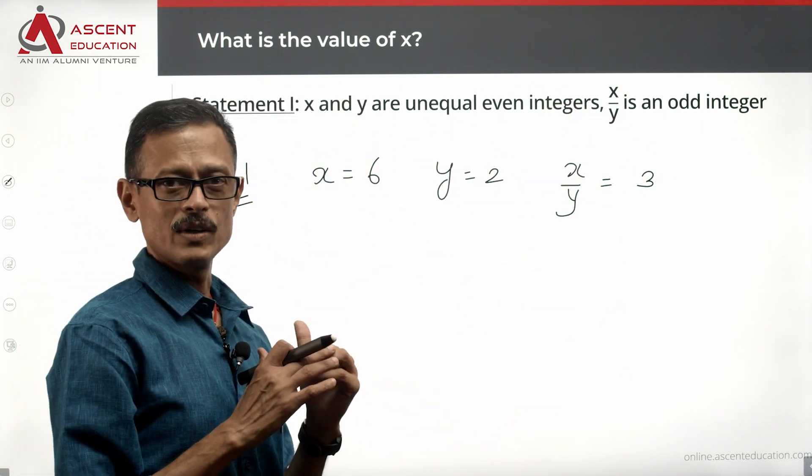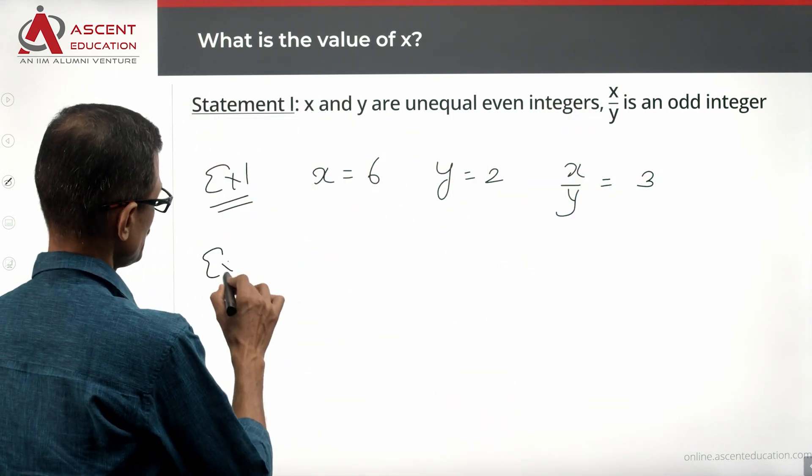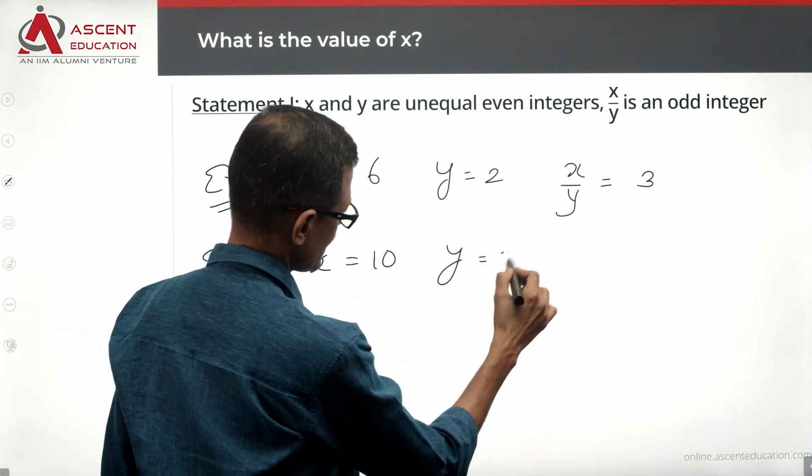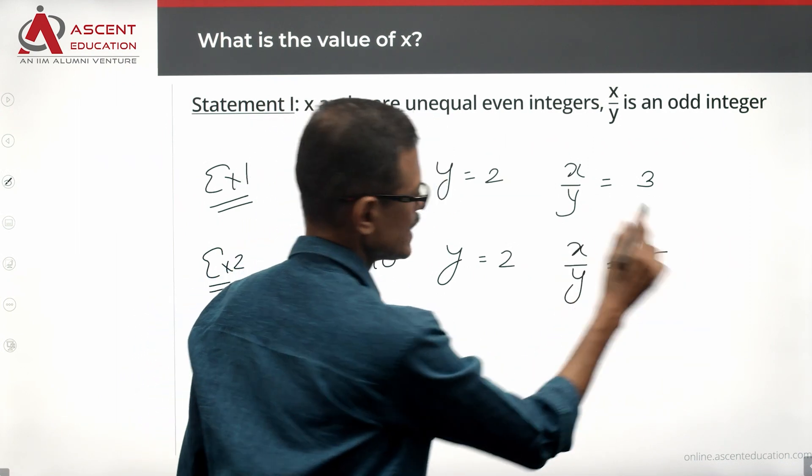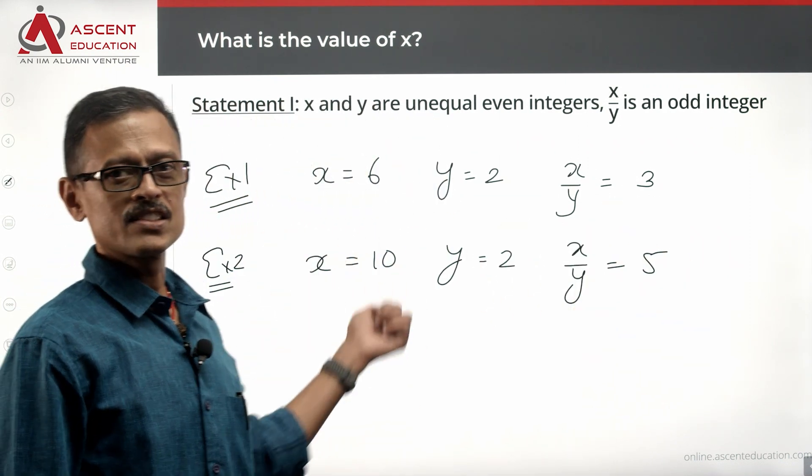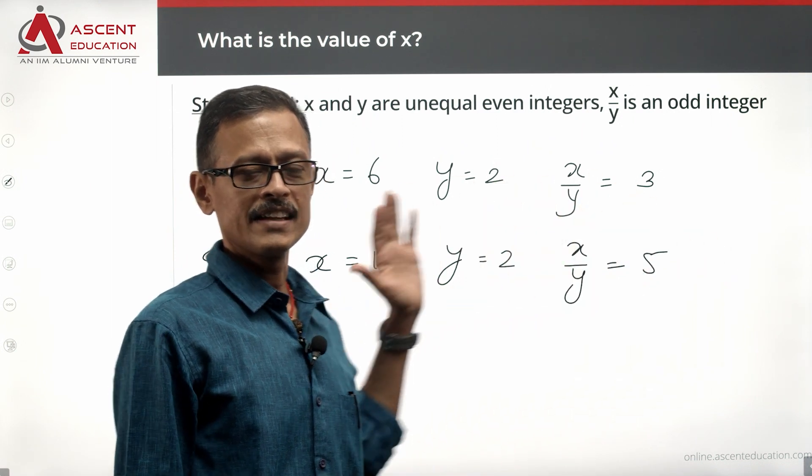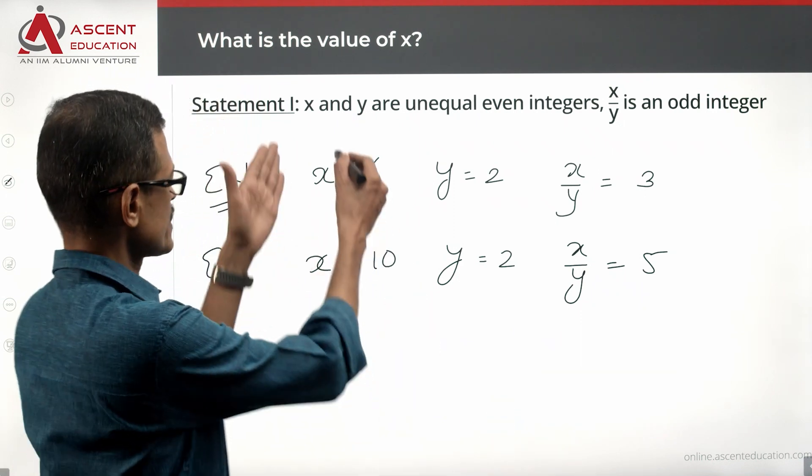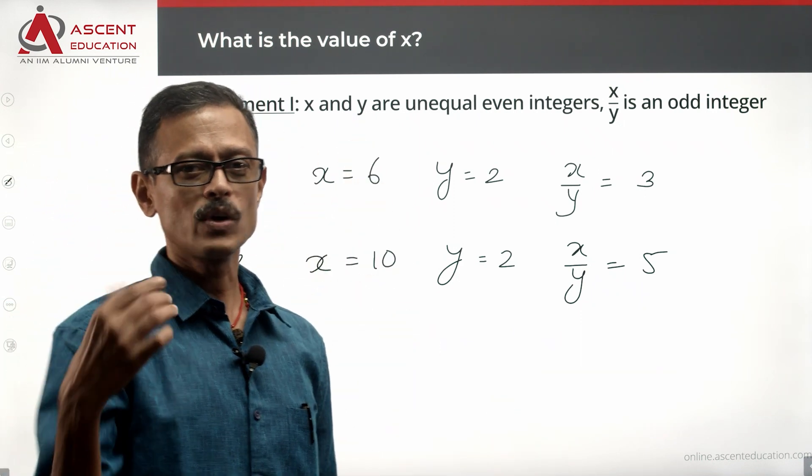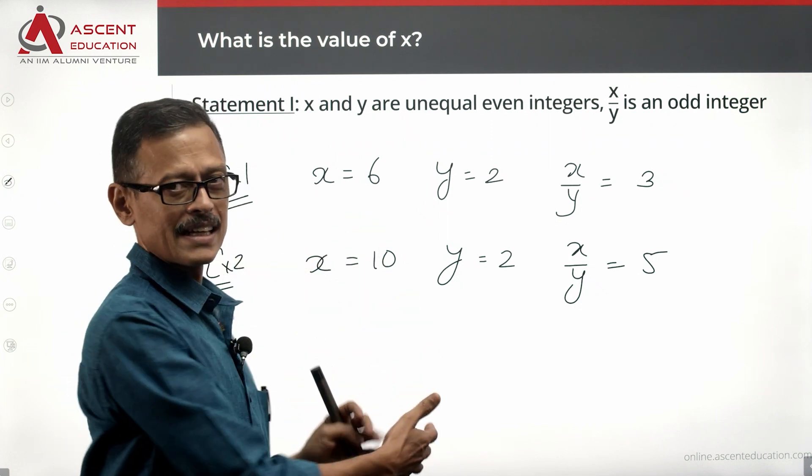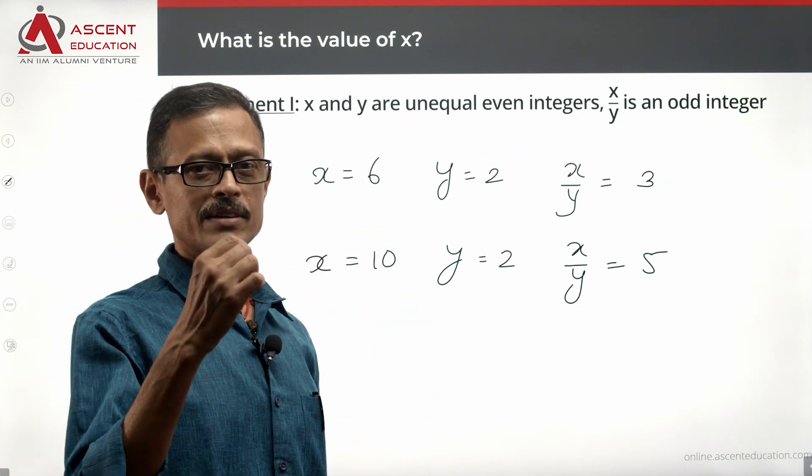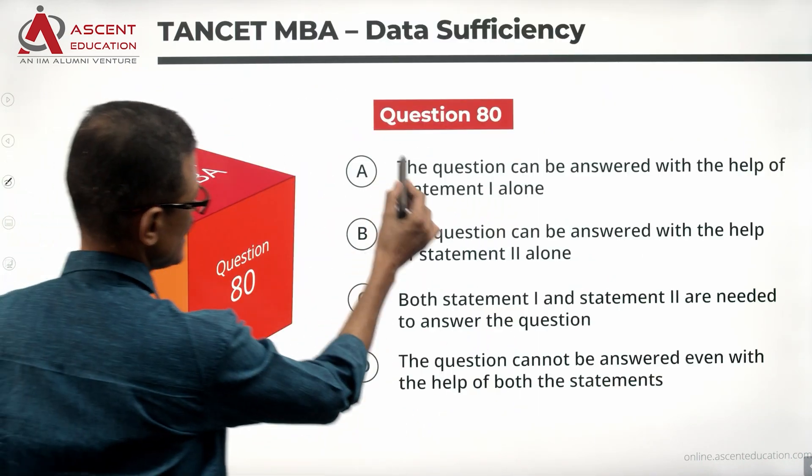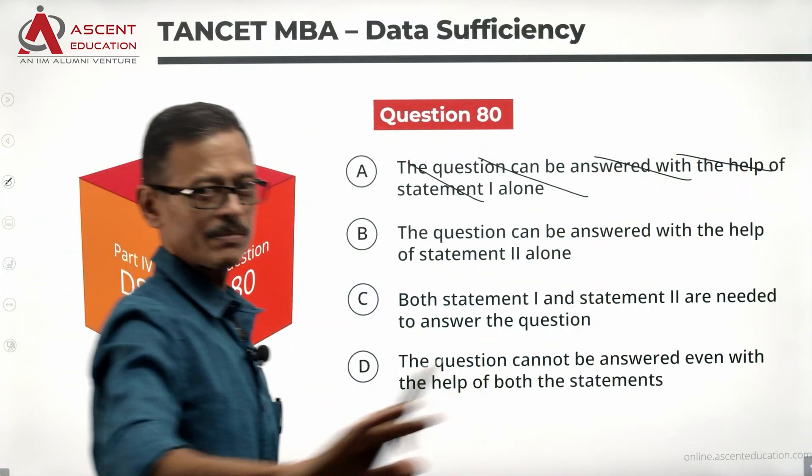In example two, I'm not going to complicate anything at all. I'm just going to make X to be 10 while retaining Y as 2. X by Y is equal to 5. All our conditions satisfy. X and Y are unequal integers. X by Y is an odd integer. So using a counter example, we've been able to establish that X has more than one value. Infinite possibilities are there. So we've not been able to get a unique value using statement 1. Statement 1 alone is not sufficient. We can eliminate A and D.